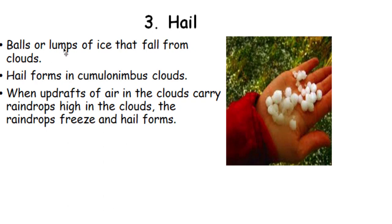Hail: hail forms in clouds when updrafts carry raindrops high up into the cloud, where the raindrops freeze and hail forms — these are balls of ice that fall from the cloud.